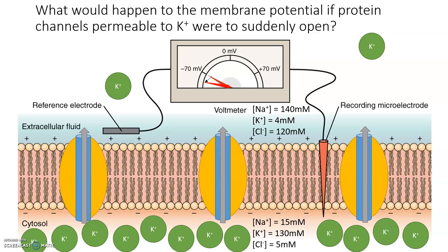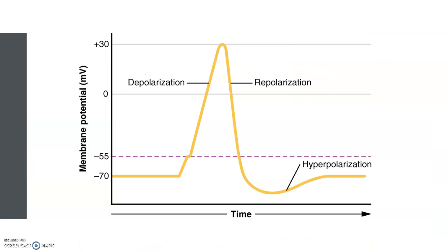It turns out that changes in membrane potential have special terminology. When the membrane potential increases above its resting membrane potential, we call this depolarization. When the membrane potential decreases below its resting membrane potential, we call this hyperpolarization. With that, it looks like we are ready to talk about how neurons send messages down the axon.